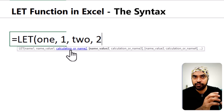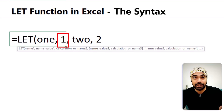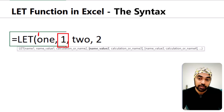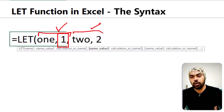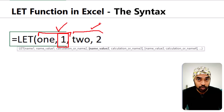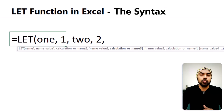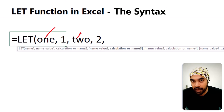You can declare this pair of variable and value — where the value could be a single number, text, an entire calculation, or a range of data. This pair can be declared as many times as needed. Once you're done declaring all variables and their values, you then declare what you want to do with them. You can choose to use any of them, all of them, or none of them.